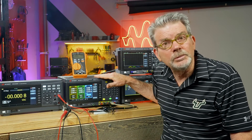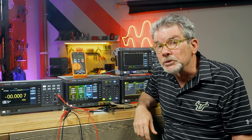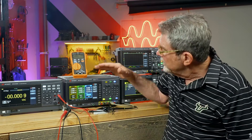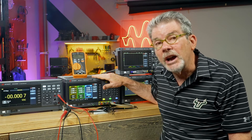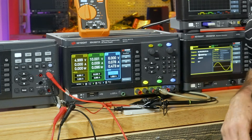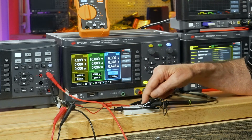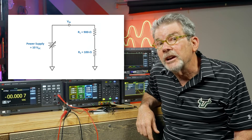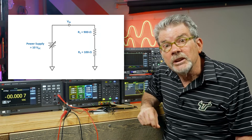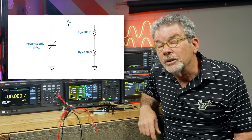DC power supplies are used to provide DC power to circuits. Almost all electronics run on DC voltage, even if it originates out of your wall socket as AC voltage. This particular DC power supply is a triple output isolated power supply. I've got channel 2 output set to 10 volts, powering up a simple resistive divider circuit. When connected to a circuit, besides showing the fixed DC output level, it also shows the amount of current being drawn and the amount of power being delivered.